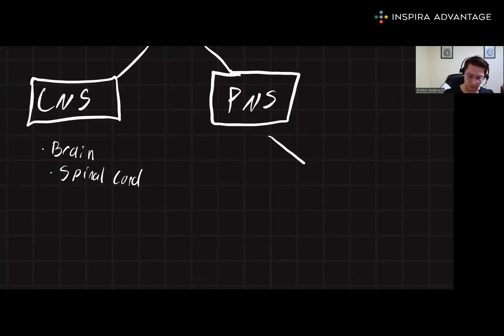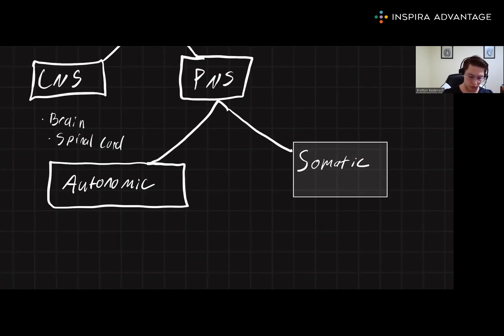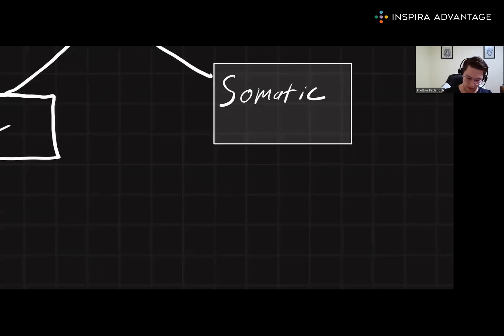We have the somatic nervous system and the autonomic nervous system. The somatic system controls all voluntary movement and physical sensation.